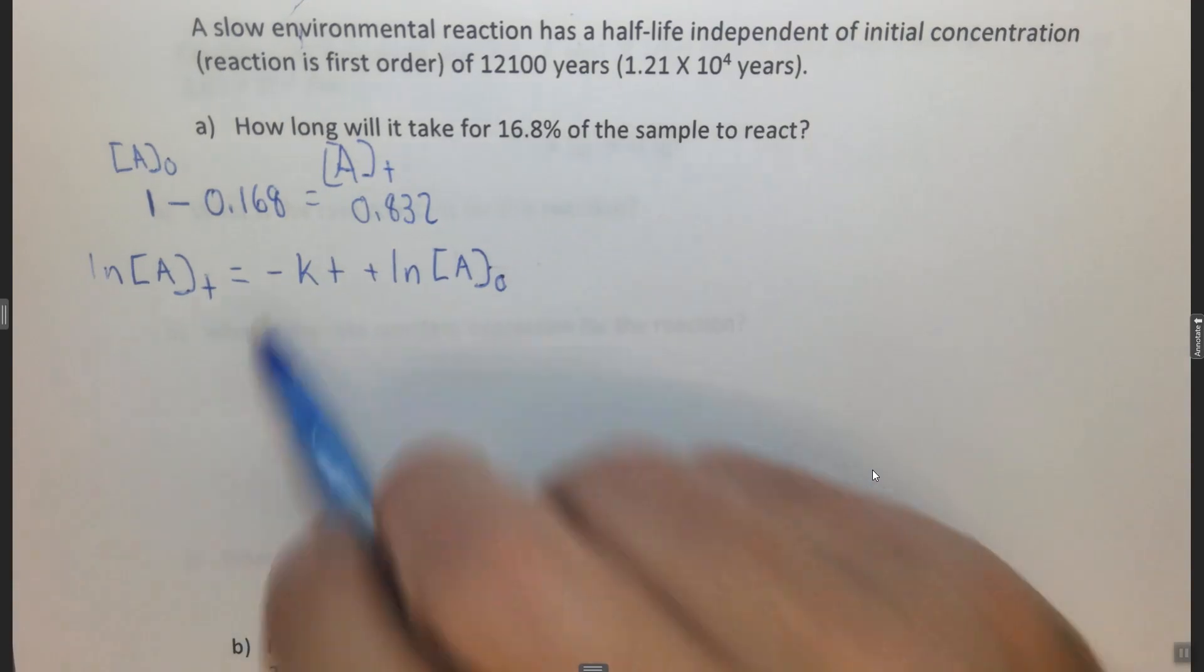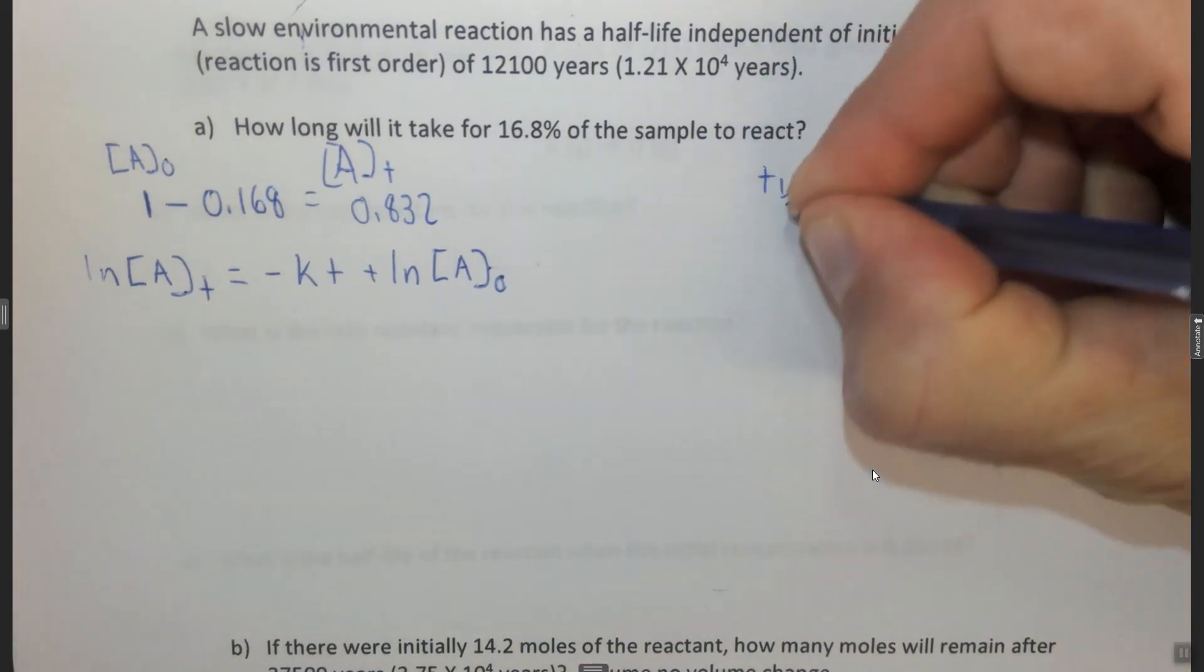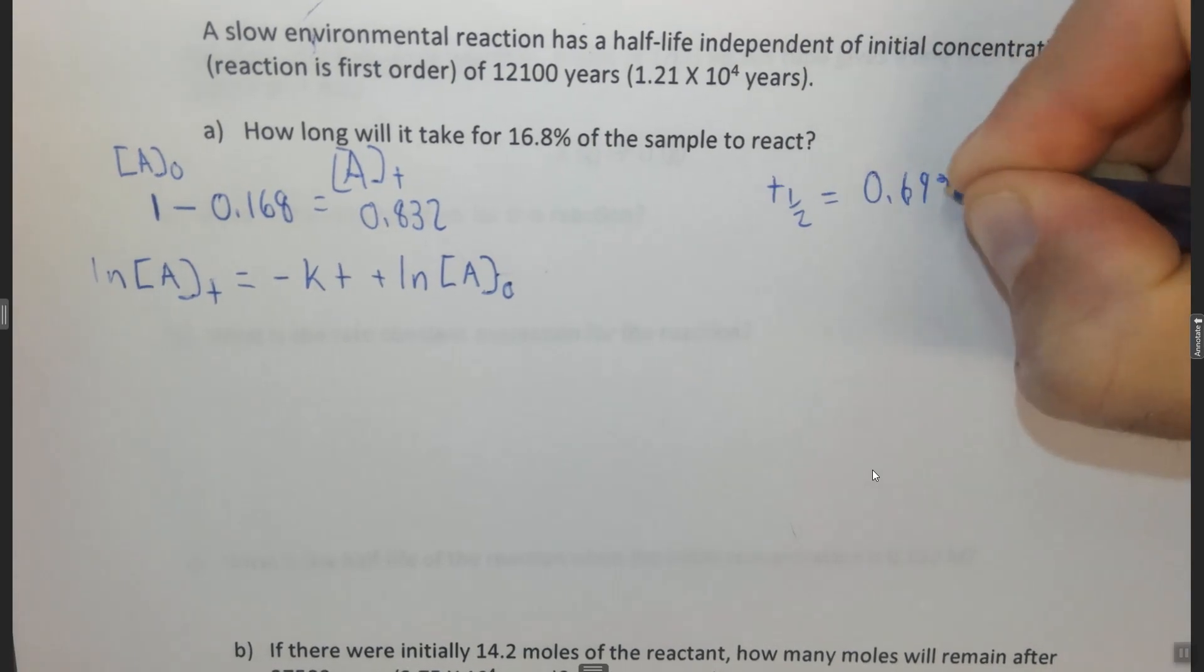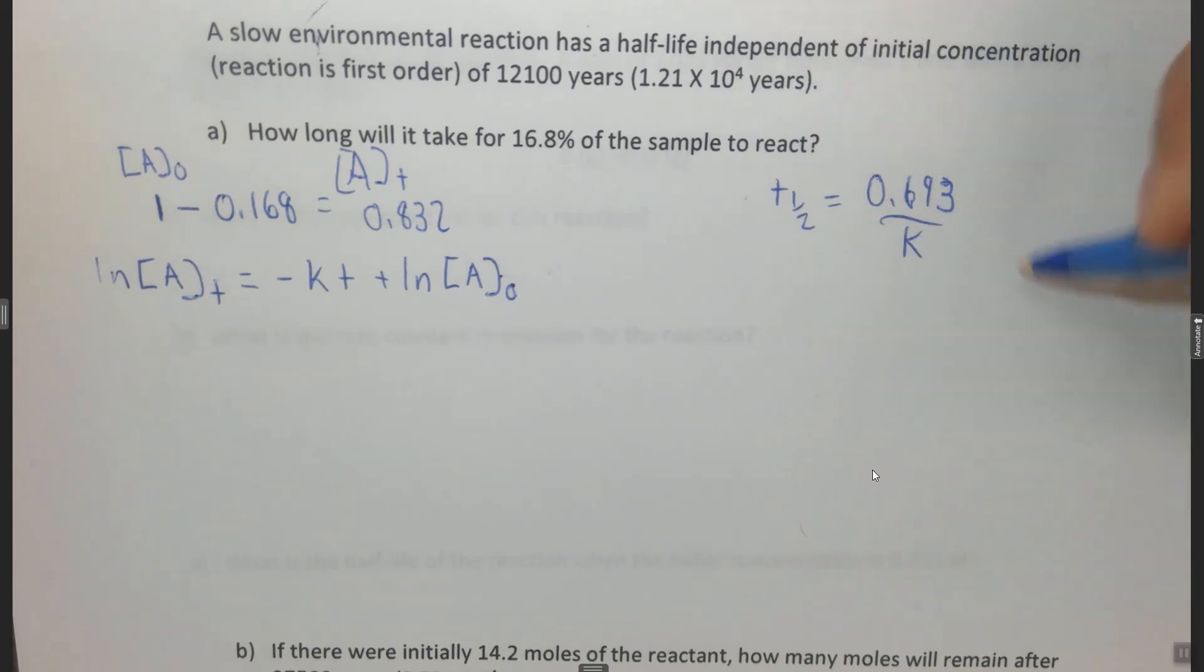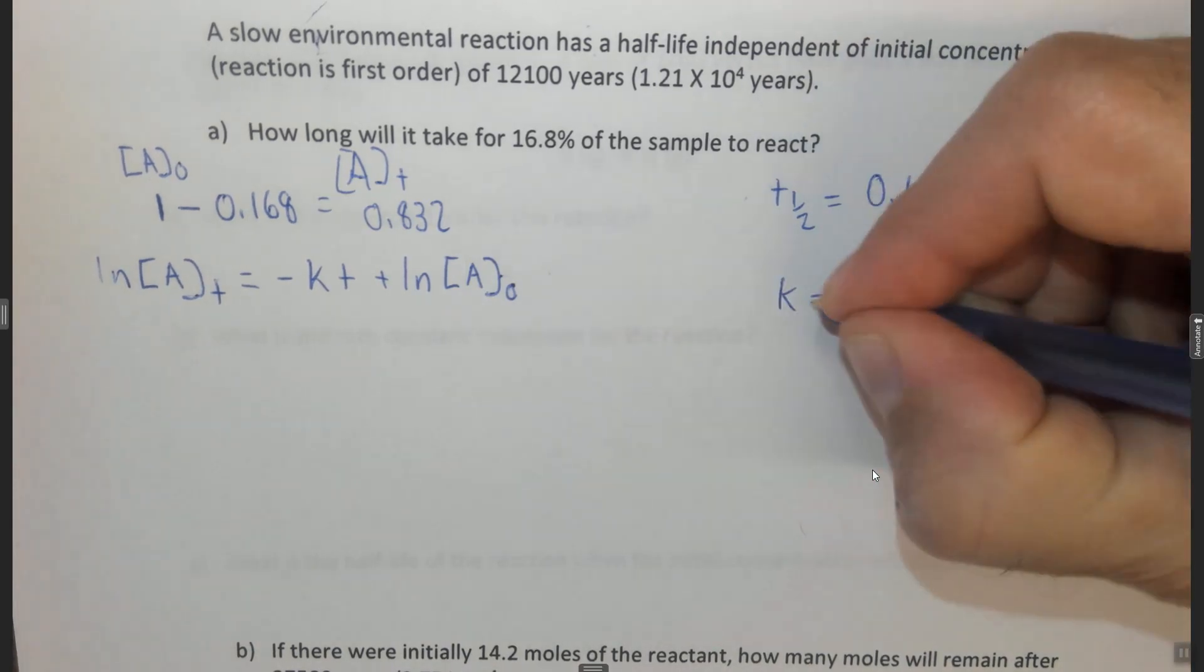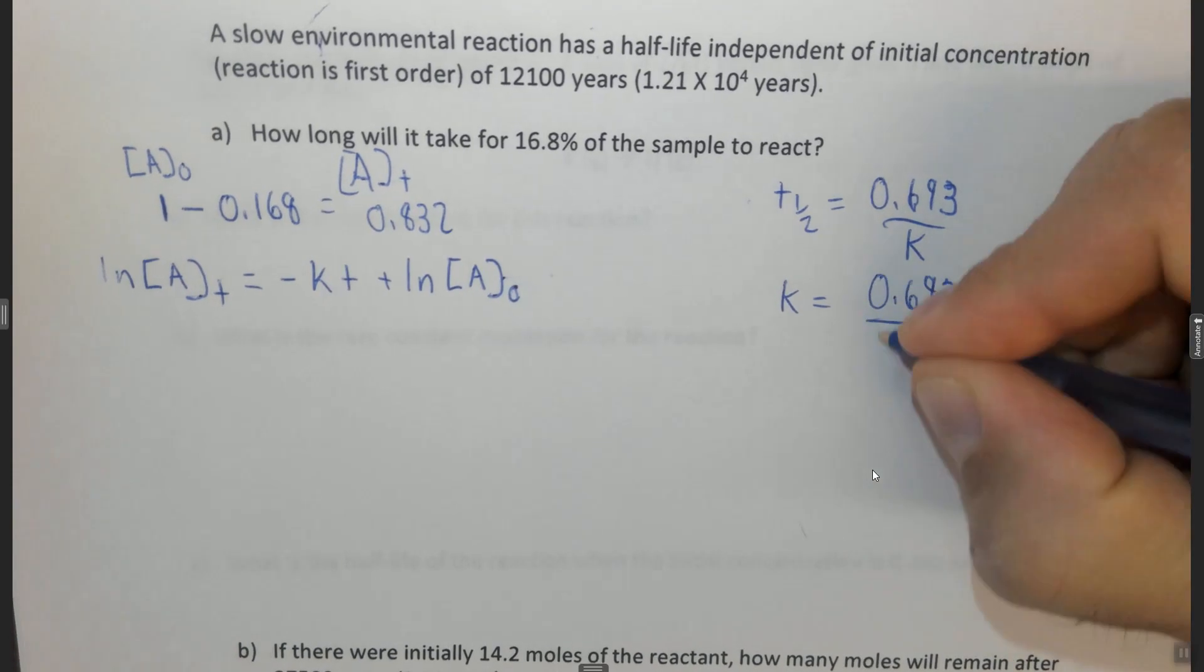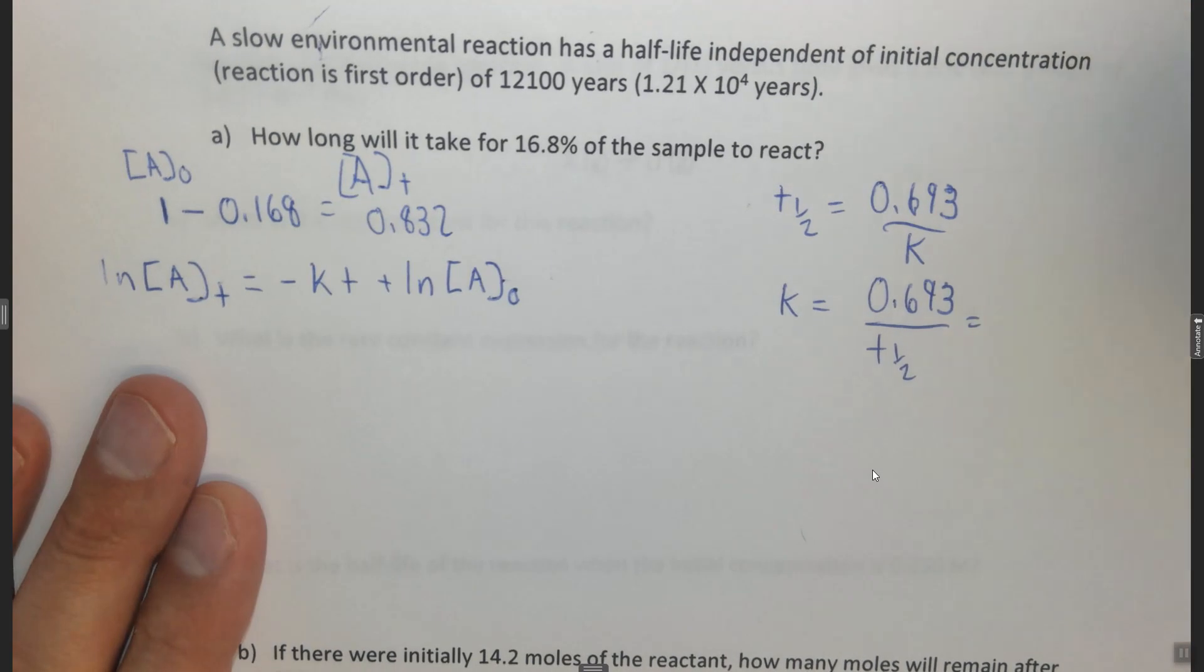Now, the only thing we need to do is find K. We know that the T half equals 0.693 over K. If we rearrange this equation, multiply by K divided by T half, K equals 0.693 divided by the time of the half-life. In this case, we know the time of the half-life.